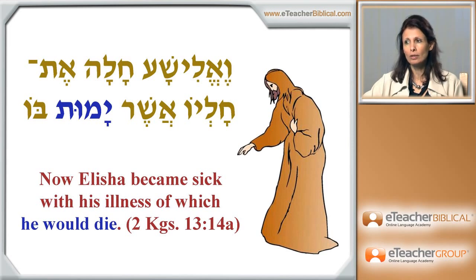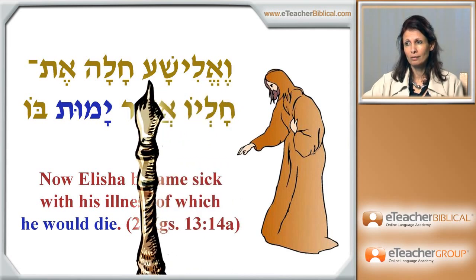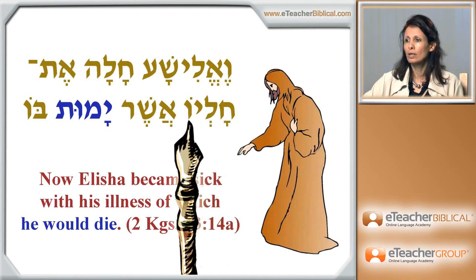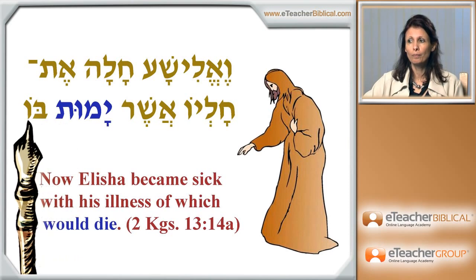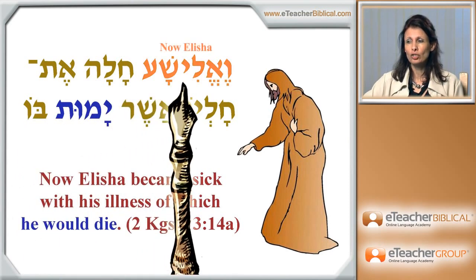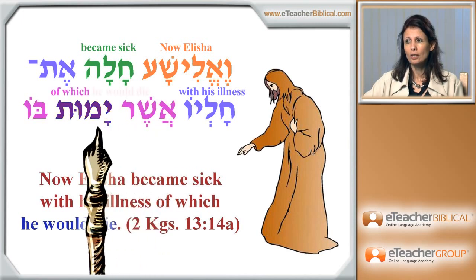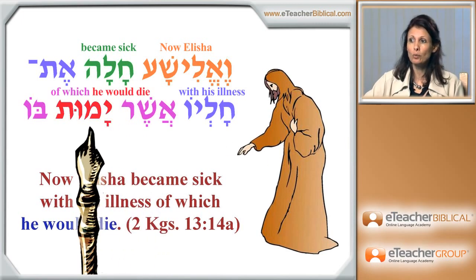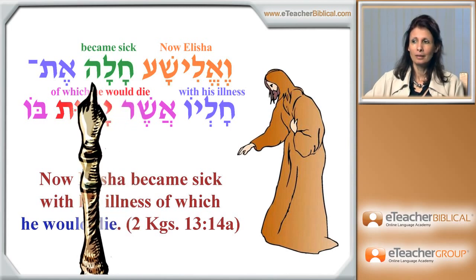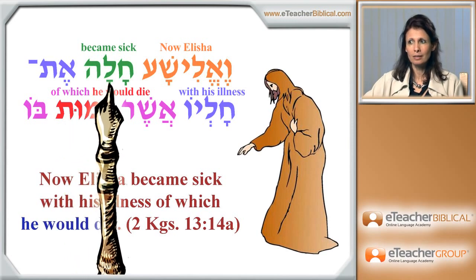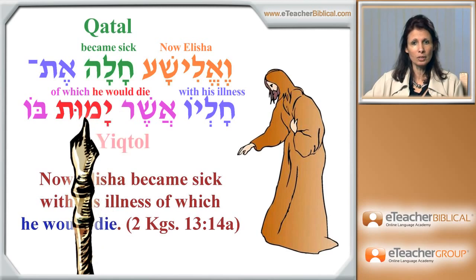I will read you the verse, you can read after me. Now Elisha became sick with his illness, which he would die — of which he would die. Now we have two verbs here: we have the verb Chala and we have the verb Yamut. But it seems very awkward to us, because Chala is Katal, and Yamut is Iktol verbal form.